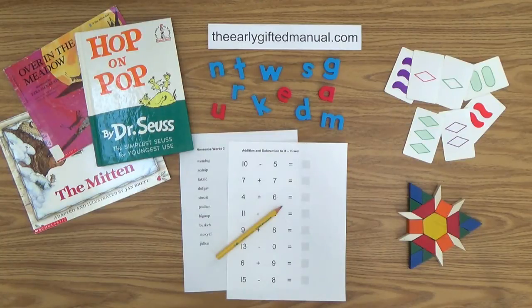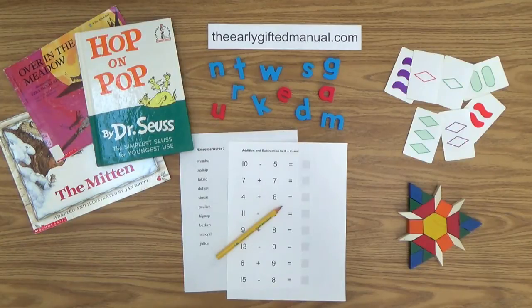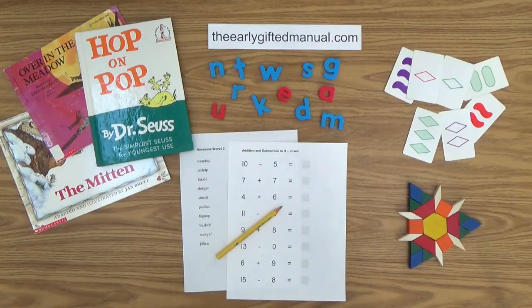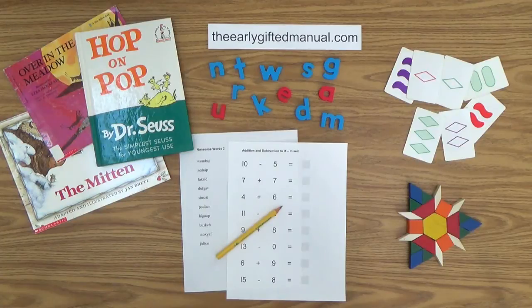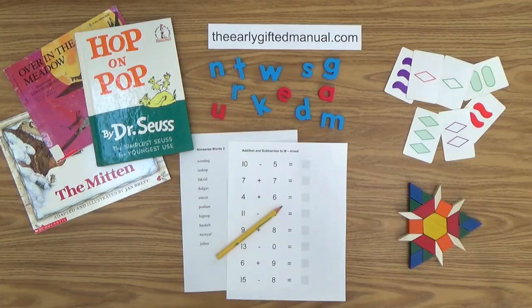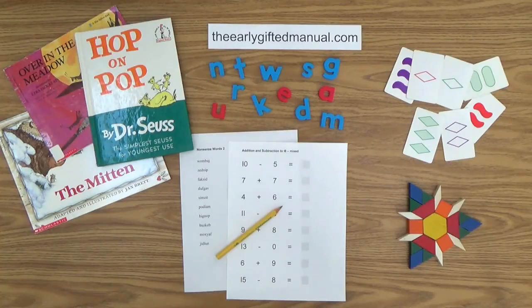As the video lessons are designed to work in conjunction with the program on my website, I ask you to, at some point, click on the URL link in the description box below and this action will take you to theearlygiftedmanual.com. By doing that, you will be able to put this lesson and all of the video lessons here on my channel in the proper context of the total program that I am presenting to you and your child.